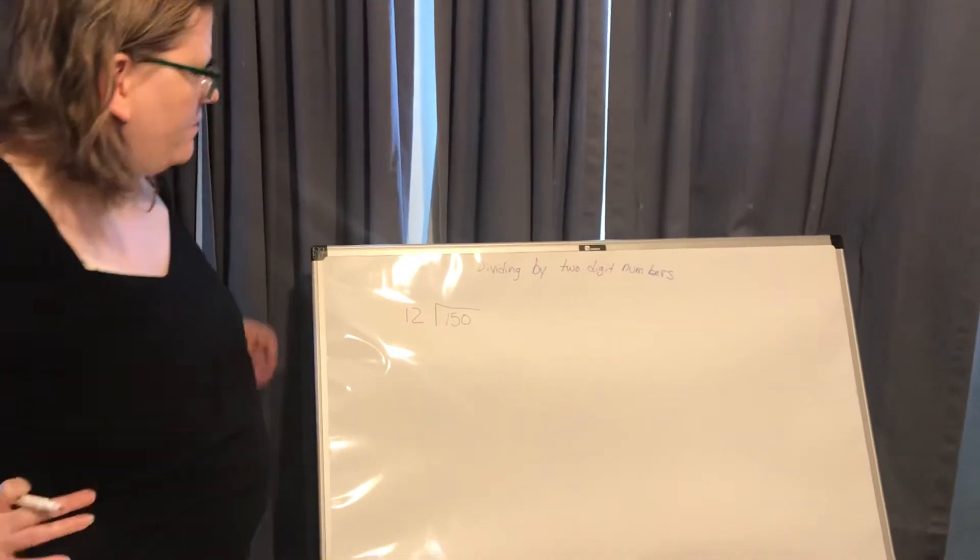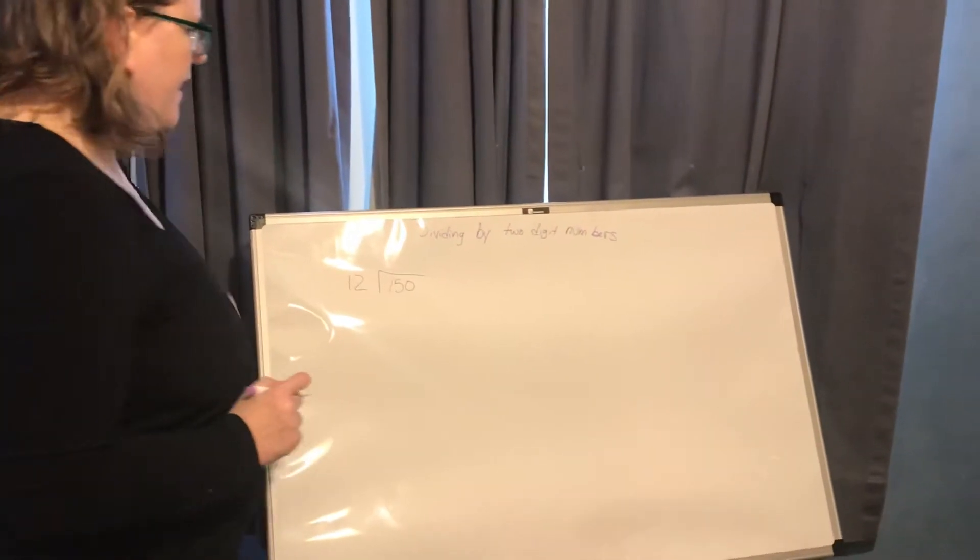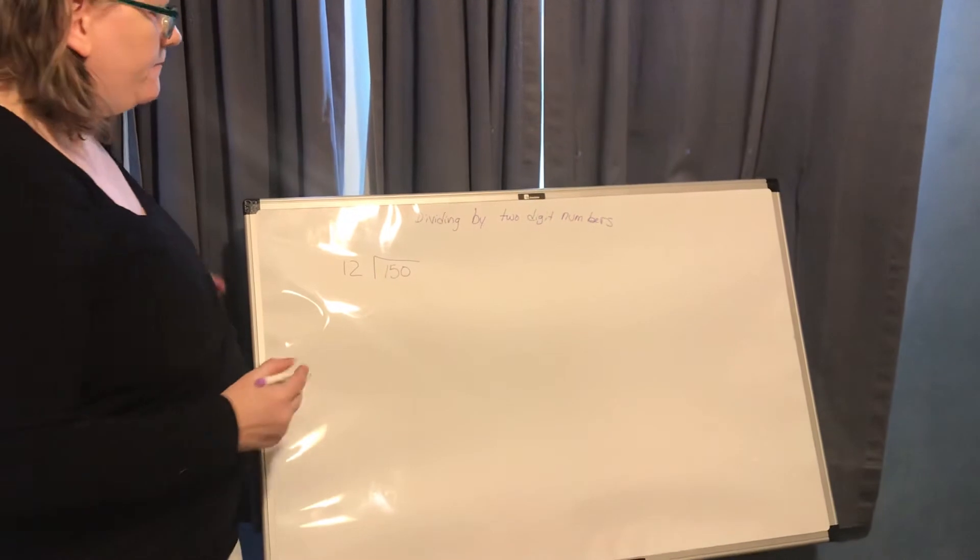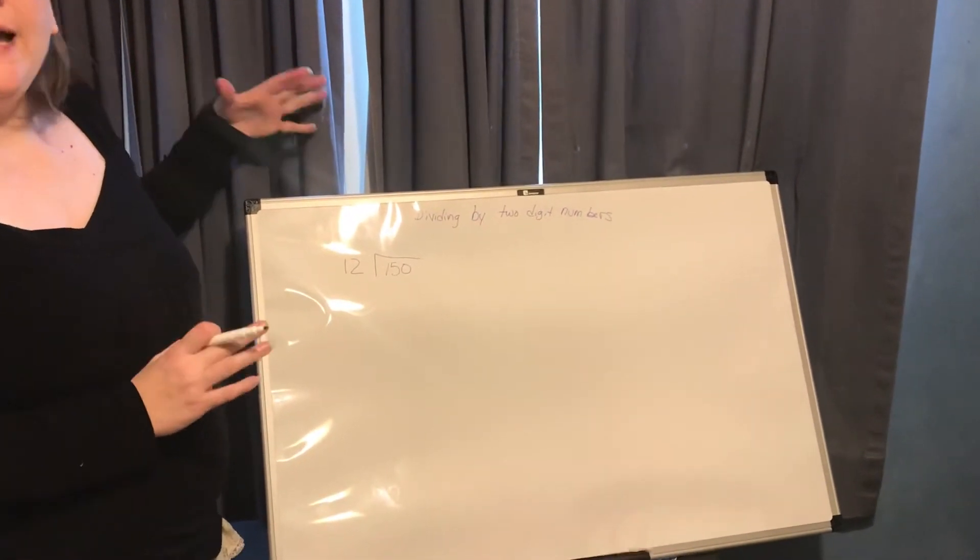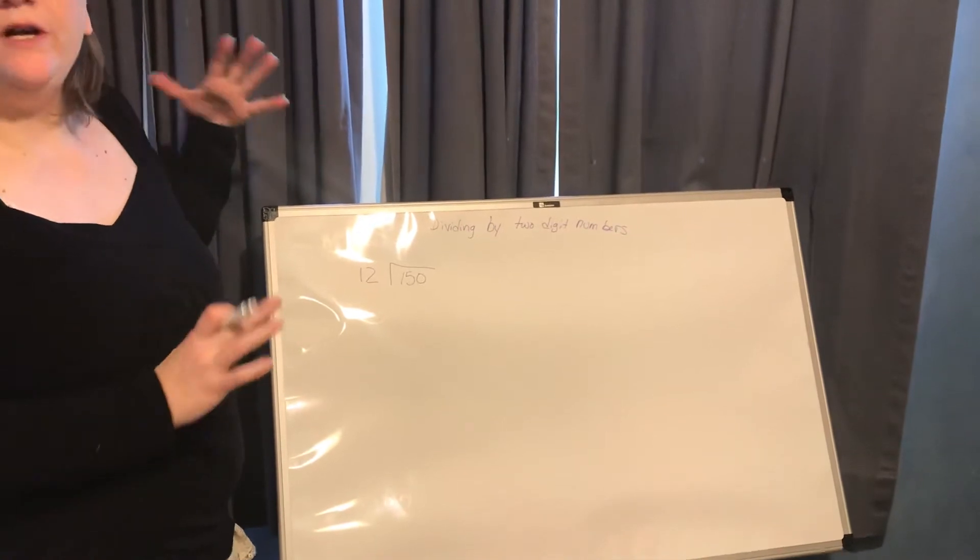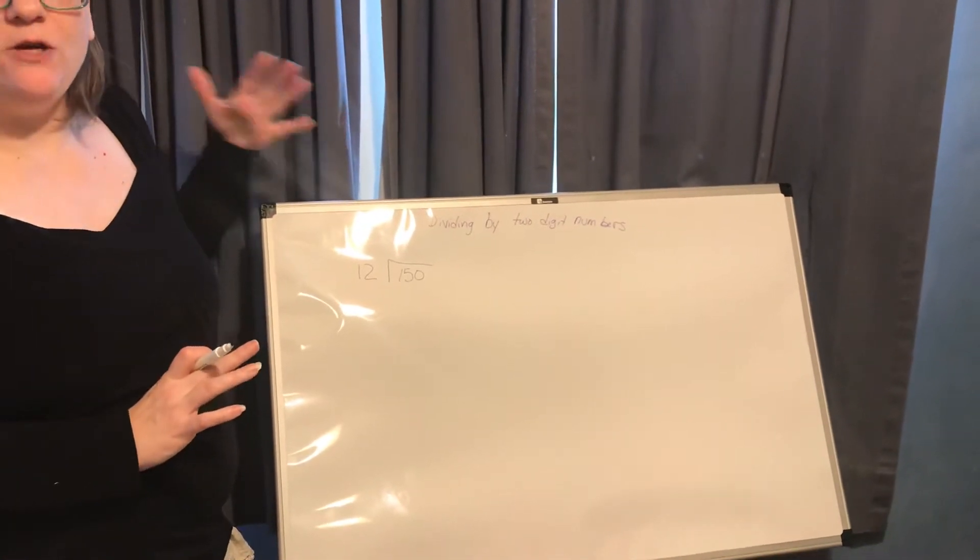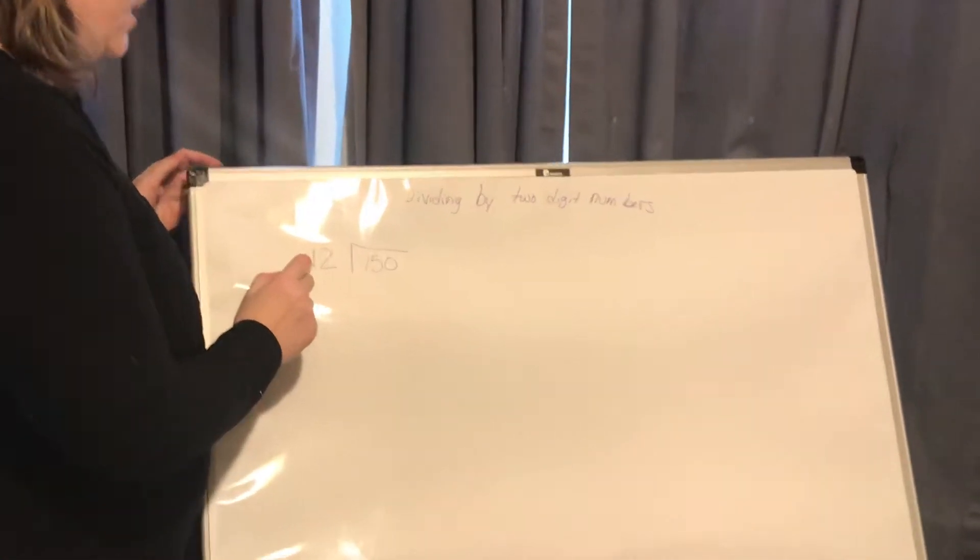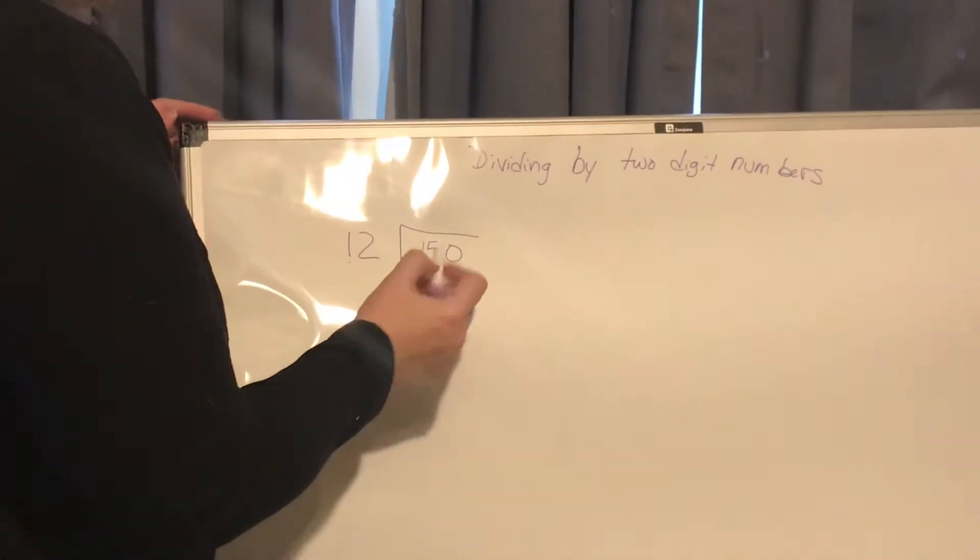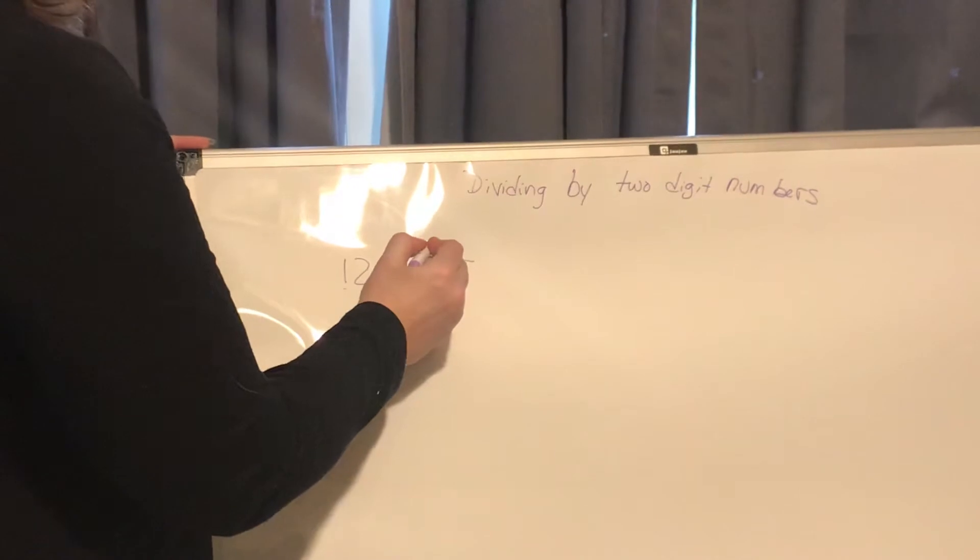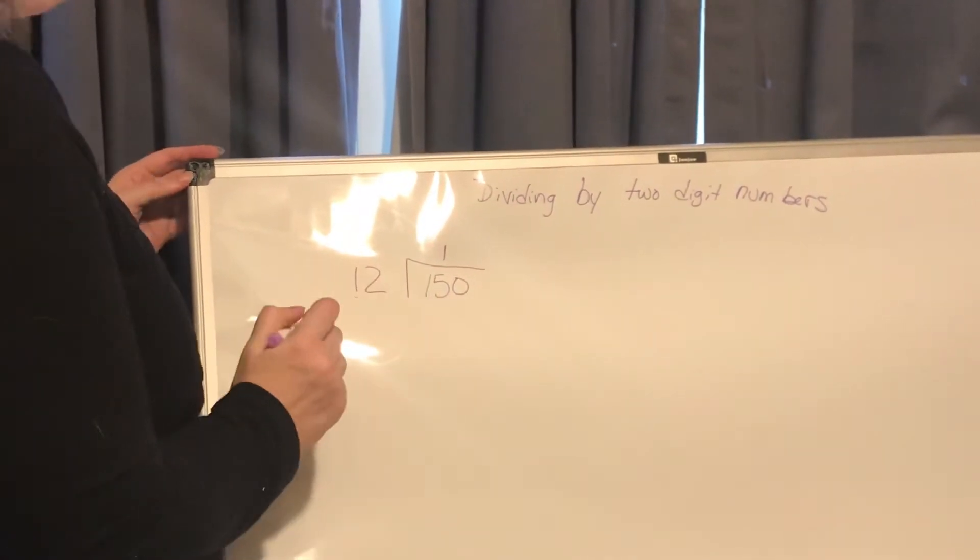So our first example is 150 divided by 12. The steps play out the same as any other division problem you've worked on. First I look to see if 12 can go into 1, and of course it can't, but 12 can go into 15 one time. So I put the 1 above the 5 of the 15.